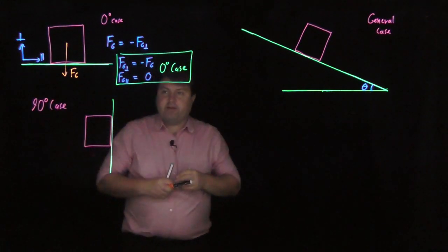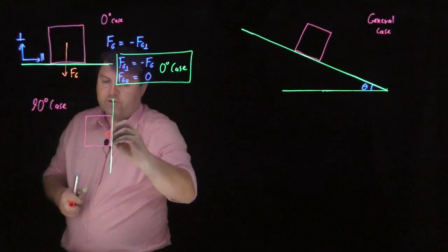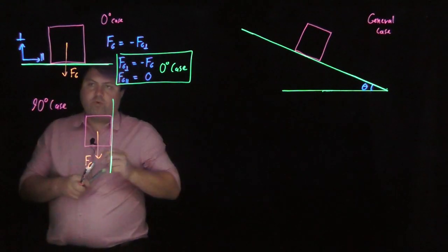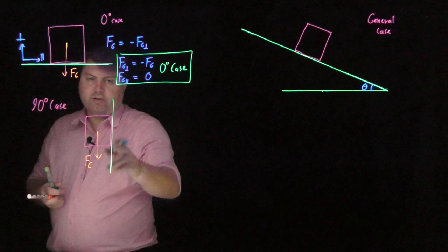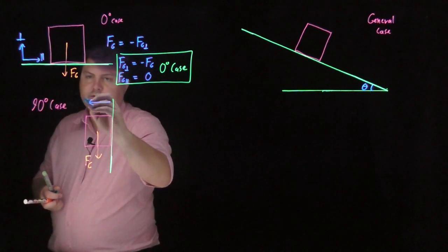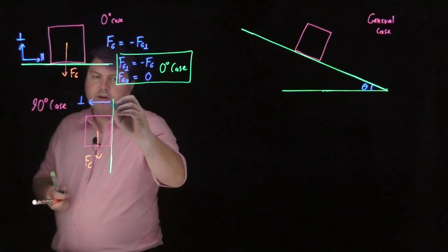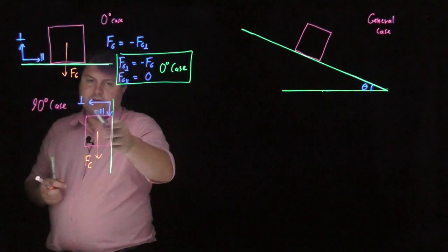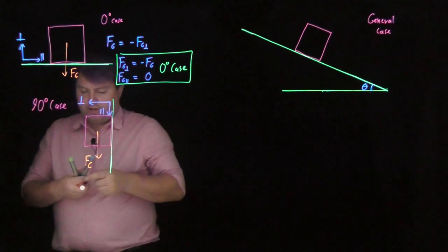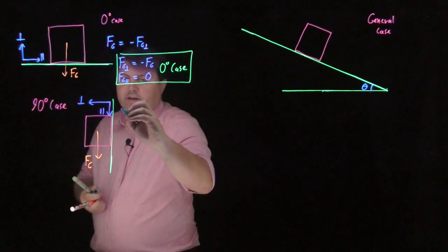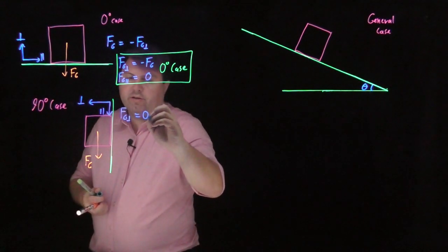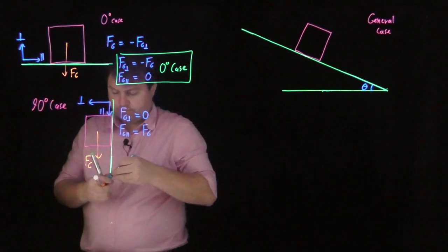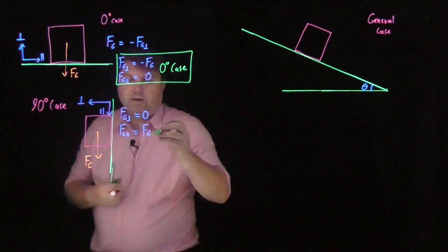If we look at the 90-degree case, we can draw our force of gravity going in this direction. We write our coordinates: what is perpendicular to the surface is in this direction, and what is parallel to the surface is in this direction. In this case, FG perpendicular is zero, and FG parallel is FG. That is the 90-degree case.